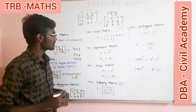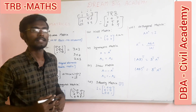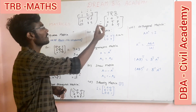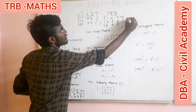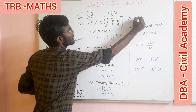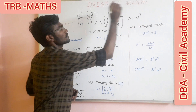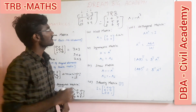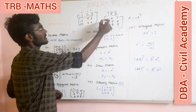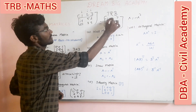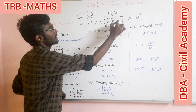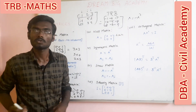Next is the skew matrix. Skew matrix means A is equal to minus of A transpose. You can say A equals negative A transpose.